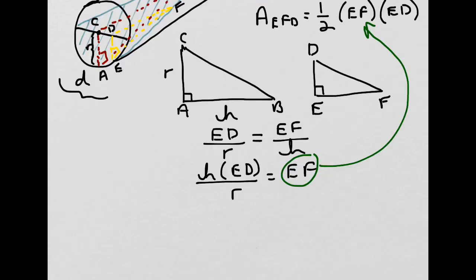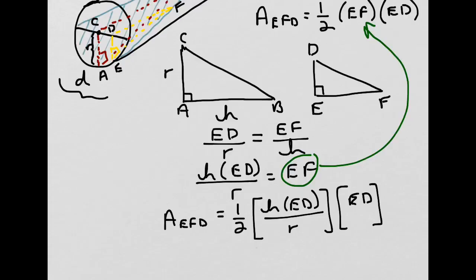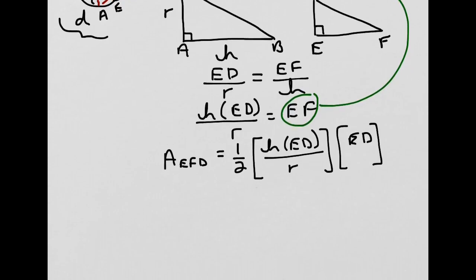And when we do that, we get the area of EFD is equal to one-half EF, which is H times ED over R times ED. And when we multiply this out, we would get the area EFD is equal to H over 2R times ED squared.